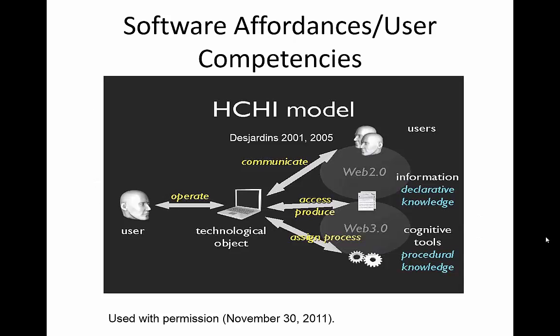Affordances can be thought of as the quality of an object to provide or make a specific function available to the users, while competencies refer to the quality of individuals of being adequately or well qualified to use those functions. The HCHI, or Human-Computer-Human Interaction Model (Desjardins, 2001–2005), is used as the basis for determining the competencies which will be addressed by the affordances embedded in the software tools used, and these can be classified into four basic categories.